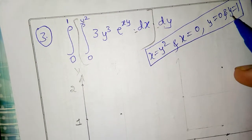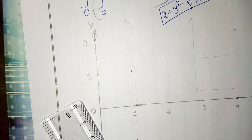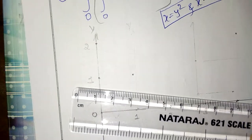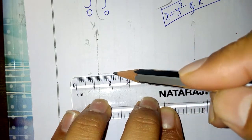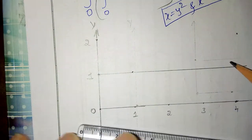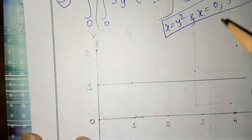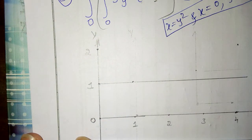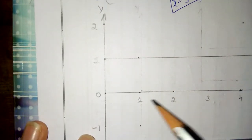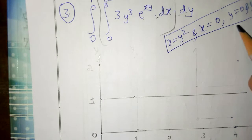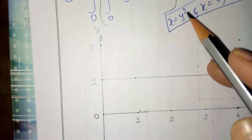Now, what is the line y is equal to 1? In the y-axis, at 1, if we draw a horizontal line parallel to the x-axis, we get the line y is equal to 1. The line x is equal to 0 is the y-axis. The line y is equal to 0 is the x-axis. Now we have to find the curve for x is equal to y².